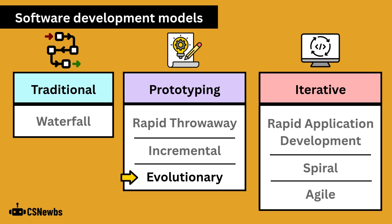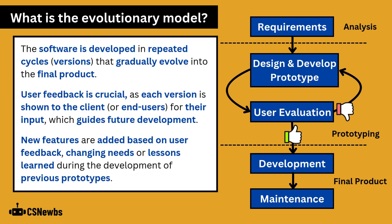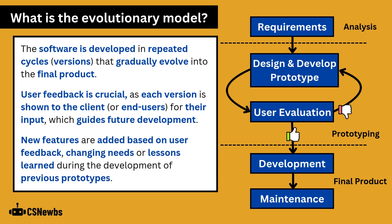The evolutionary model is an example of software development that focuses on the use of prototypes. The software is developed in repeated cycles or versions that gradually evolve into the final product. User feedback is crucial, as each version is shown to the client or end user for their input, which guides future development. New features are added based on user feedback, changing needs, or lessons learned during the development of previous prototypes.